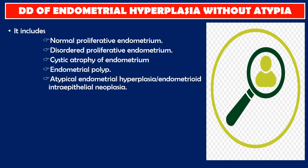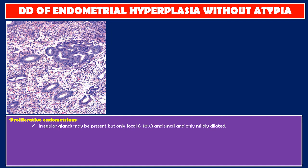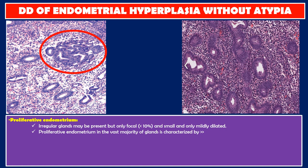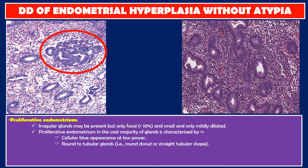Proliferative endometrium: regular glands may be present but only focally — less than 10% — and small and only mildly dilated. In the vast majority of glands, it is characterized by a cellular blue appearance at low power, round to tubular glands (round donut or straight tubular shape), even regular spacing between glands, tall pseudostratified columnar epithelium in glands, and numerous mitotic figures in glands and stroma.